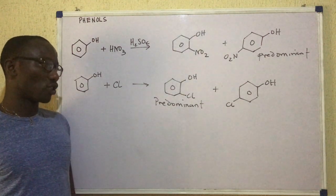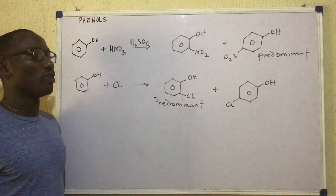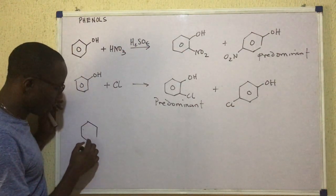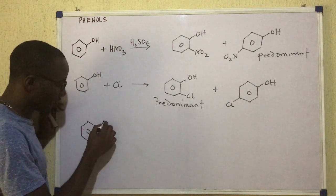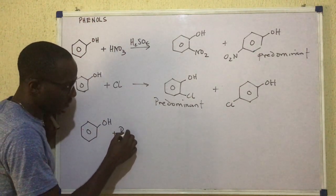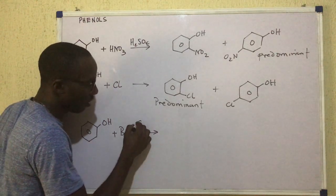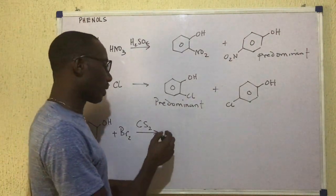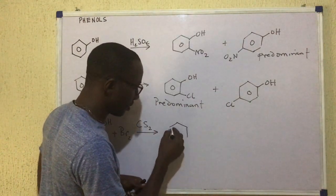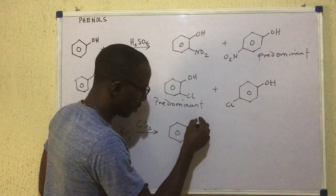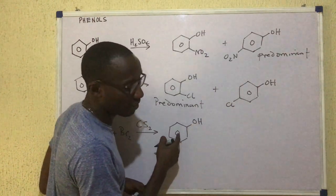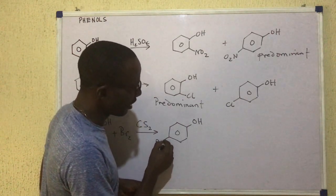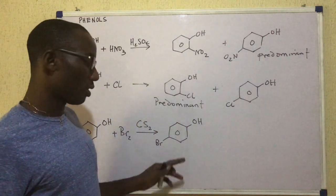What about reaction with bromine? When phenol reacts with bromine, the products you obtain would depend on the reaction conditions. For example, if phenol were to react with bromine in the presence of carbon disulfide as solvent, then you are going to get this OH.